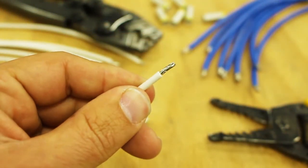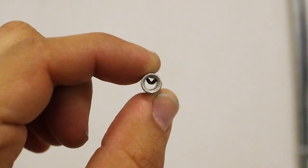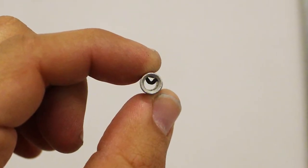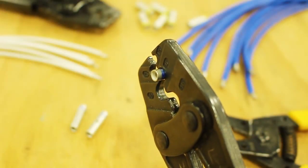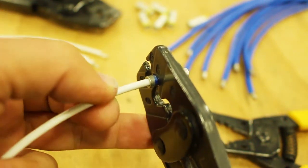The first step is to make sure you have correctly stripped the wires to the proper length. If you look inside the butt splice, you'll see an indentation that your conductors should butt up against. Insert your wire, making sure the insulation touches the connector, otherwise you run the risk of a weak connection.